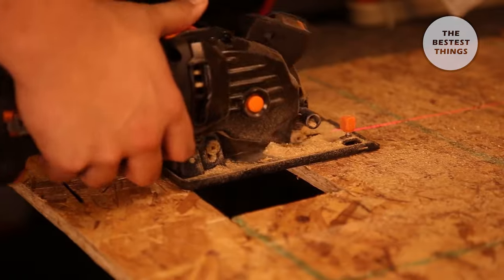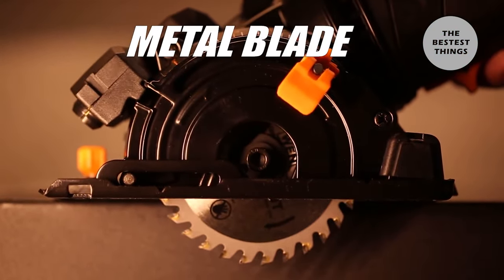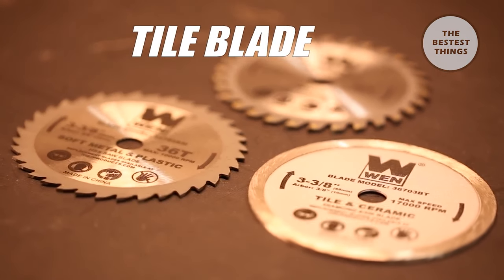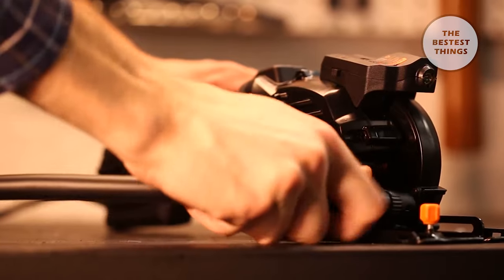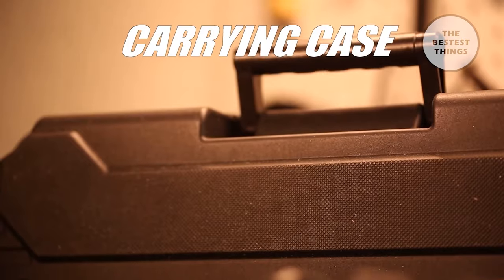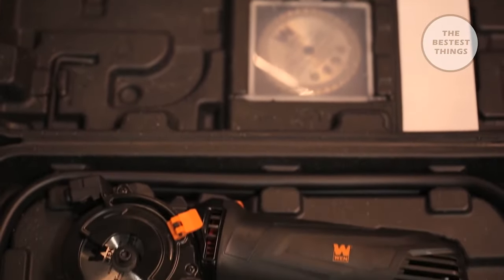Your Wynn Compact Circular Saw also comes packed with accessories, including a blade for wood, a blade for metal and plastic, a blade for tile and ceramic, an 80 inch dust extraction tube to help collect sawdust during operation, and a convenient blow mold carrying case, complete with storage compartments for all your accessories.